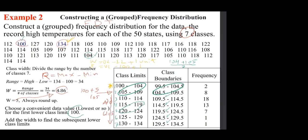Student: If we have the value 104.5, would it go in the second class, not the first? Professor: It is the upper boundary of the first class and also the lower boundary of the second class. If 104.5 is part of the data, by definition of boundaries, it belongs to the next class — the second class.